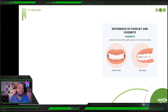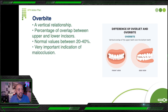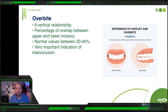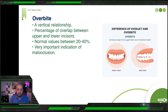Overbite is a vertical overlap of upper anterior teeth to lower anterior teeth — a vertical relationship described as a percentage. For example, 20% means the upper anteriors cover 20% of the height of the lower anteriors. Normal value is between 20 to 40%, with 30% being optimal. It is also a very important indication of malocclusion.